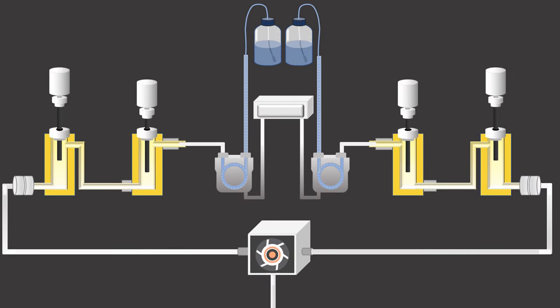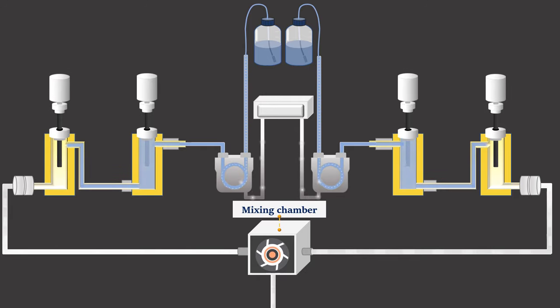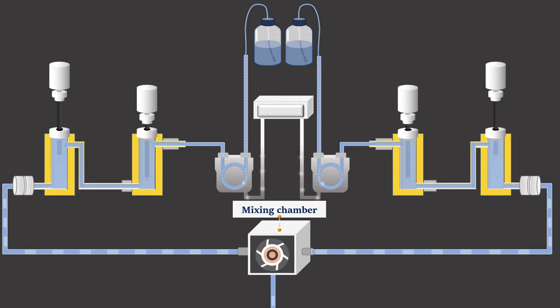In the HPLC system, a vacuum pump and a degasser are connected to the pump, and used to remove dissolved gases from the solvents. The pump drives each solvent to the mixing chamber, where mixing takes place under higher pressures.